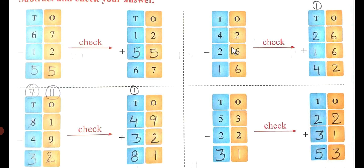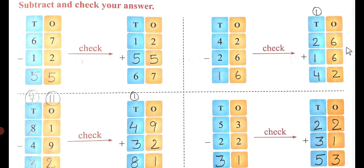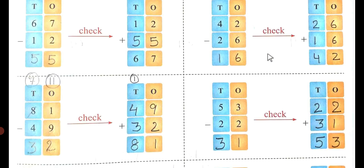Now 42 minus 26: 2 cannot be subtracted from 6, so 4 gives one number, it becomes 12. 12 minus 6 is 6, and 3 minus 2 is 1. Answer is 16. To check, add 26 and 16: write 26 above and 16 under it. 6 plus 6 is 12, carry 1. 2 plus 1 is 3, plus 1 is 4. We get 42 — the answer is correct.